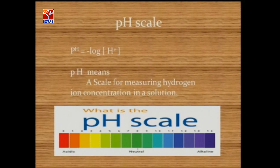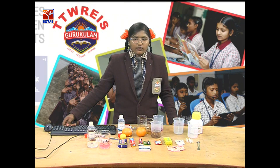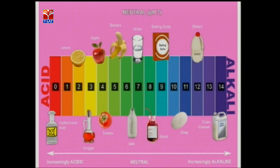Here you can observe some items on the pH scale. HCl has a pH value of 0. The pH of lemon is 2, vinegar is 3, apple is 4, banana is 5.2, tomato is 4, and milk is 6 to 7. The pH value of water is 7 — water is a neutral solution. And the pH value of baking soda is 9.